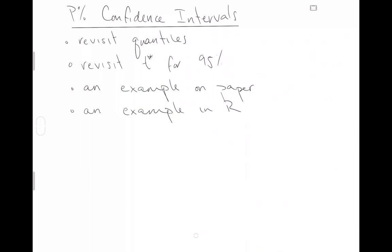In order to get to this, we'll revisit the definition of quantiles. Then we'll revisit what we did to choose t star for 95 percent confidence intervals. That is, I already gave you the code to choose this value that specifies how many standard errors you want to move up and down from your best guess of the population mean. We'll revisit that.